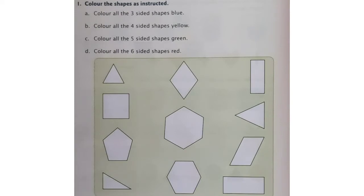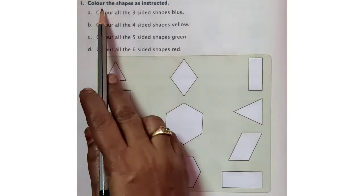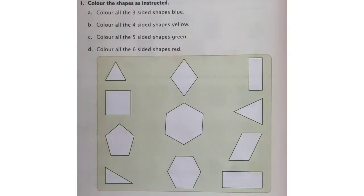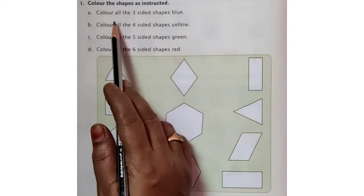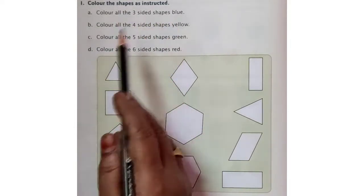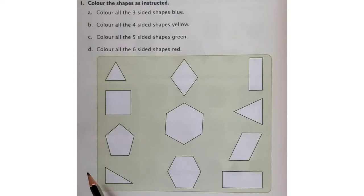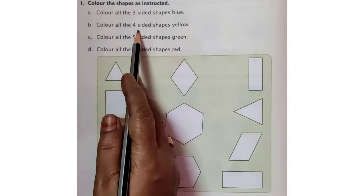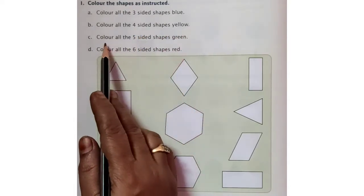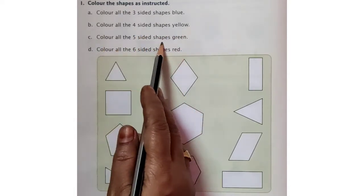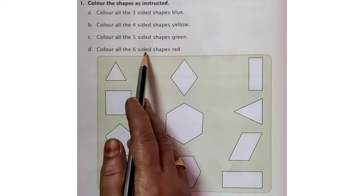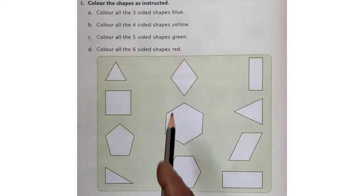All of you open page number 42, children. Write today's date. Now, let us move on to the first question: colour the shapes as instructed. Colour all the three-sided shapes blue. Colour all the four-sided shapes yellow. Colour all the five-sided shapes green. Colour all the six-sided shapes red. Here, colours are given. According to the sides, we have to colour them.